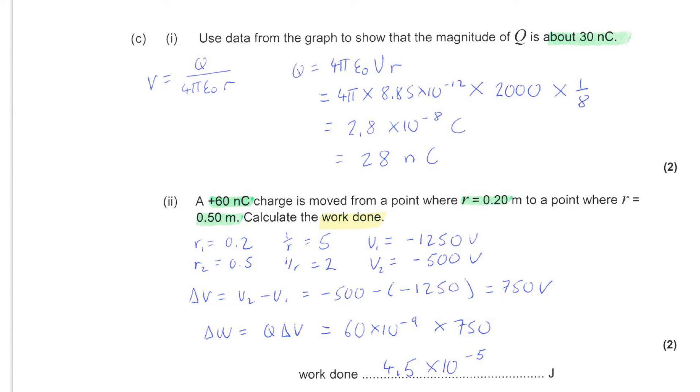Next, you're told that a 60 nanocoulomb charge is moved from a point where the radius is 0.2 metres to a point where the radius is 0.5 metres, and you are asked to calculate the work done. You may think straight away of the work done equation. So, electrical work done, delta w, is the charge times the potential difference.